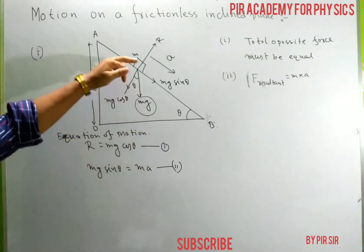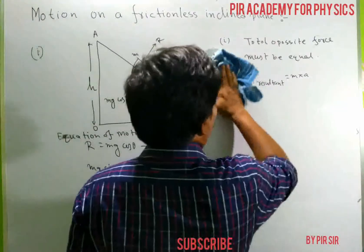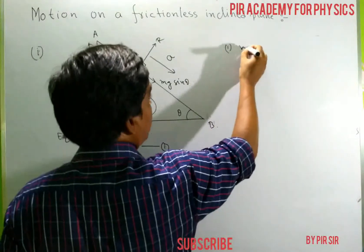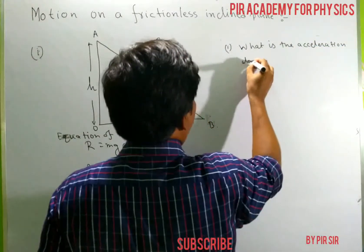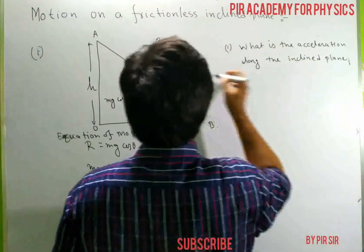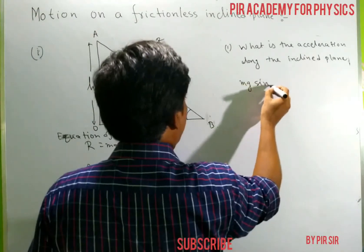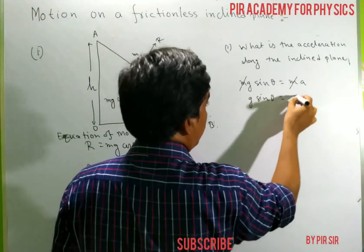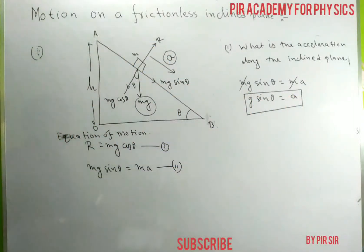From the equation of motion, cancelling M from both sides, we get the acceleration along the inclined plane: A equals g sin theta. That is the answer to question one for case one.